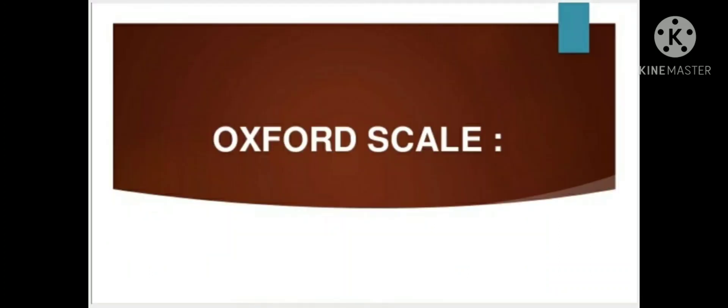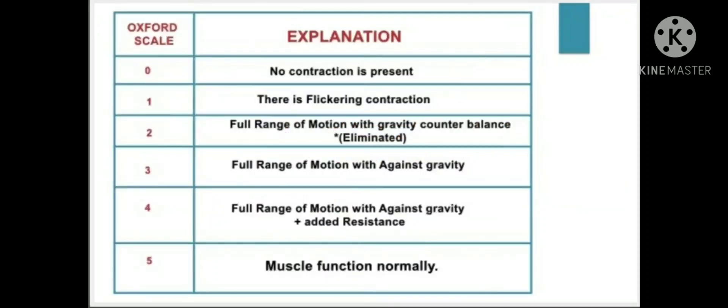The Oxford scale is similar to the MRC scale, but the only difference is that Grade 5 in the Oxford scale is described differently — it is described as 'muscle function is normal,' whereas in the MRC scale it is described as 'full range of motion against gravity with maximal resistance.'